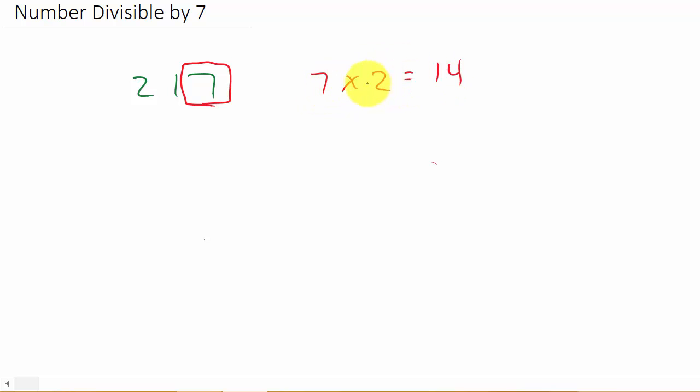That's multiplying by 2, same thing as doubling it. Then we take this result here and subtract it from the remaining digits. So 21 minus 14 equals 7, and 7 divided by 7 equals 1.